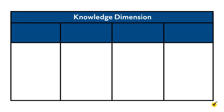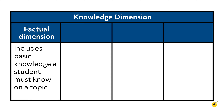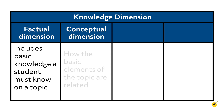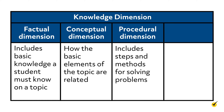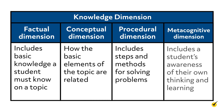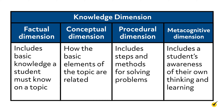The revised Bloom's taxonomy also divides each of these six levels of cognition into four types of knowledge ranging from concrete to abstract. This is known as the knowledge dimension and includes the factual dimension, which includes basic knowledge a student must know on a topic; the conceptual dimension, or how the basic elements of the topic are related; the procedural dimension, which includes steps and methods for solving problems; and the metacognitive dimension, which includes a student's awareness of their own thinking and learning.